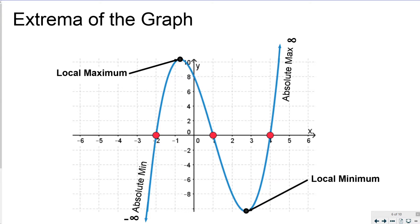We have the extrema of the graph. We have the local maximum. We have a local minimum. At the local maximum, this is the highest point for an interval.